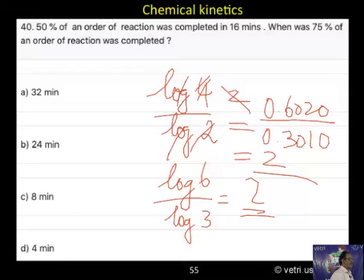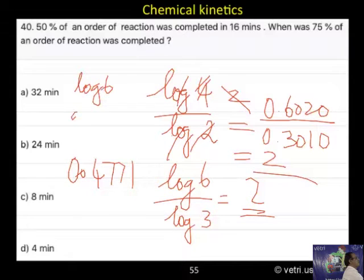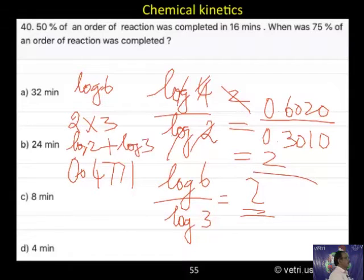See here, let me give idea. What way? Log 3, you know the value? 0.4771. I asked you to memorize. Agree? The same way log 6, what I will write. Log 6 means, 2 into 3, I will write. So, log 2 plus log 3, I will write. What is log 2? 0.3010. Log 3, I know already, it is 0.4771.